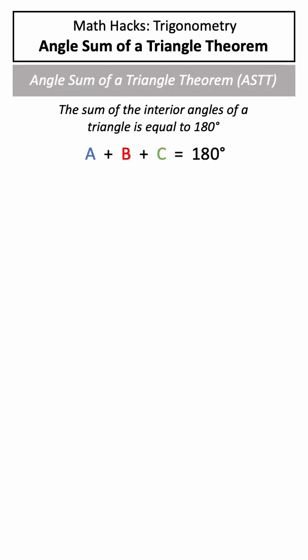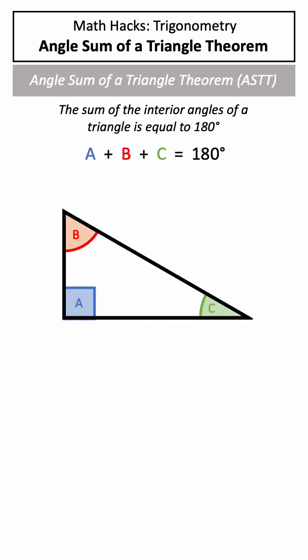The angle sum of a triangle theorem states that the interior angles of a triangle add up to 180 degrees. So if we have a triangle with three angles, and we know the value of two of the angles, we can solve for the third by substituting these numbers into our theorem, rearranging, and solving.